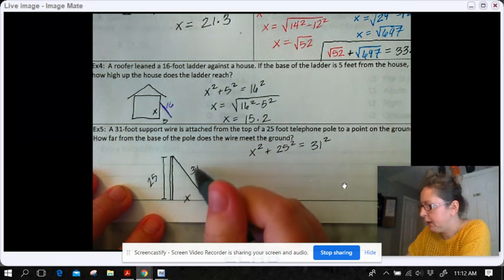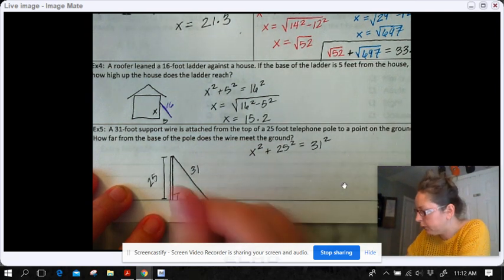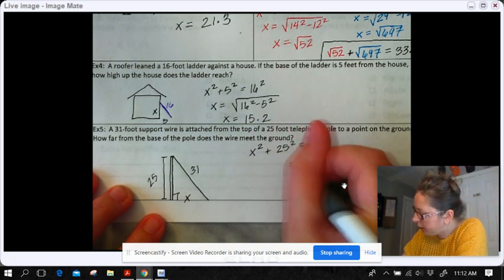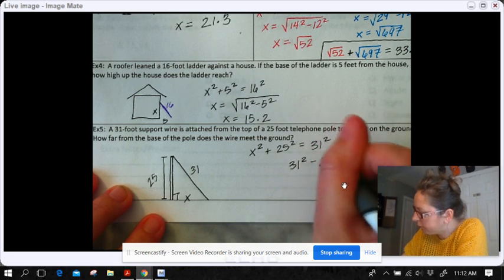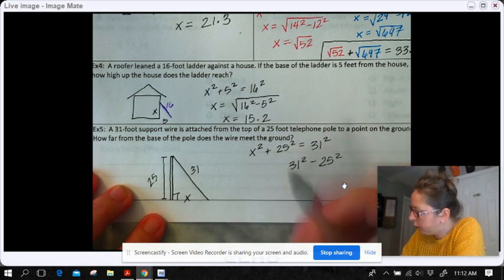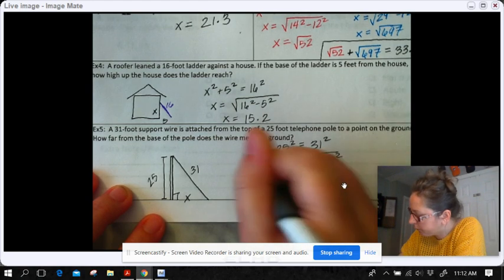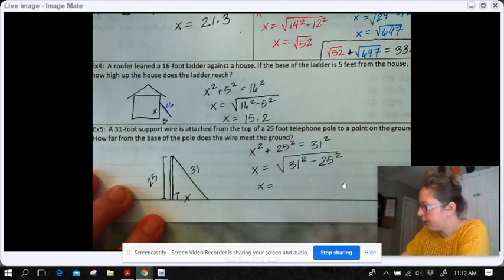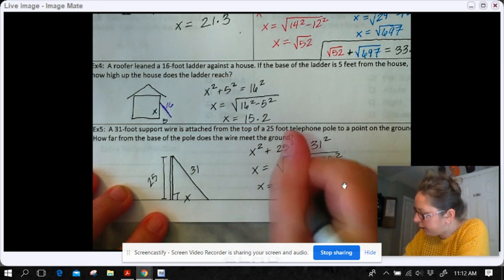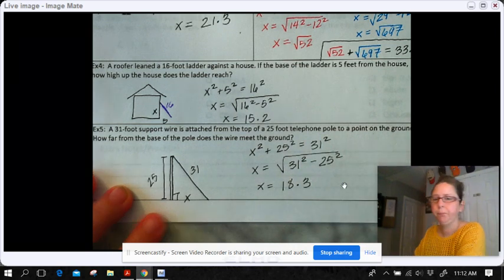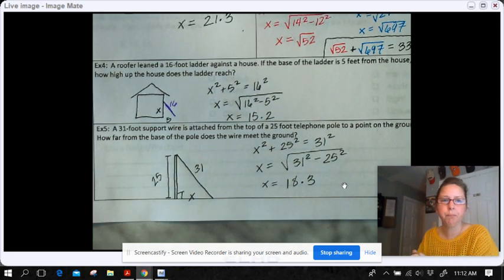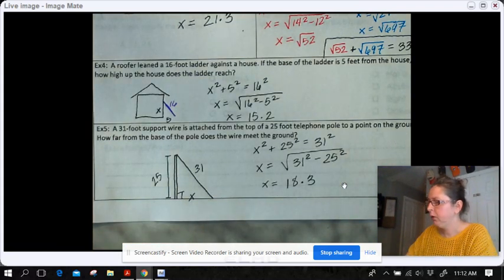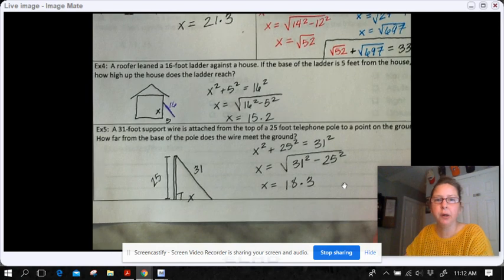So I've got x squared plus 25 squared equals 31 squared, because that is my hypotenuse over there. This would be the right angle. So let's subtract the 25 squared from both sides, and then square root that to get the x by itself. And when I type that in my calculator to simplify it, I'm going to get 18.3. That's how far away the wire is from the pole. So that is how we're going to be applying the Pythagorean Theorem.